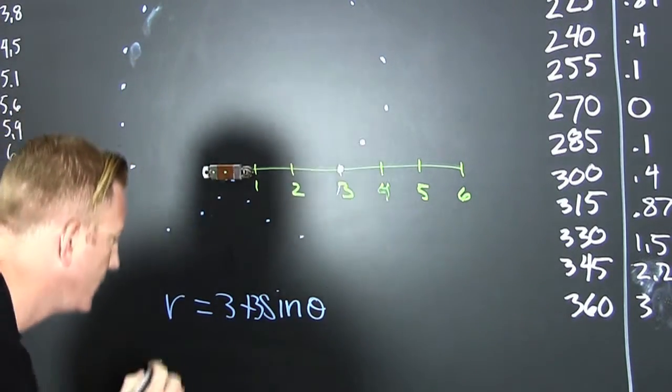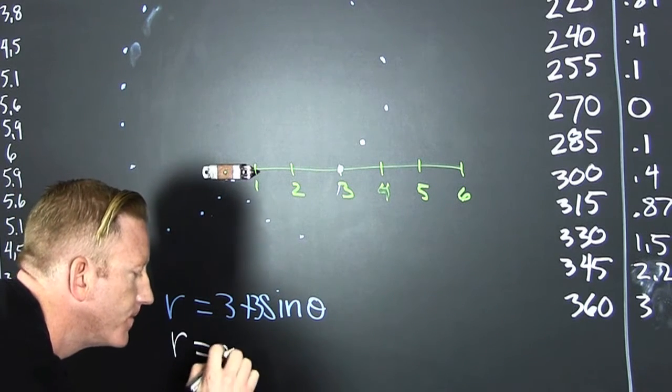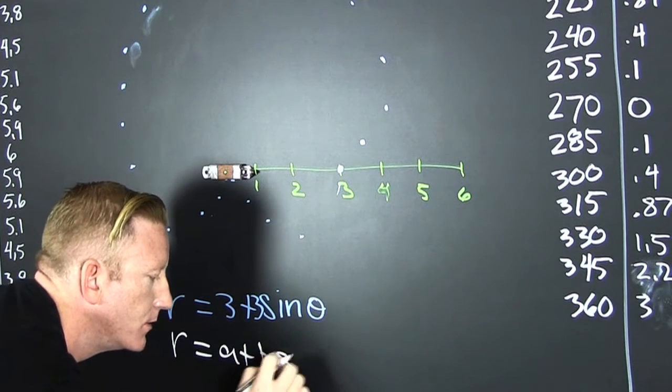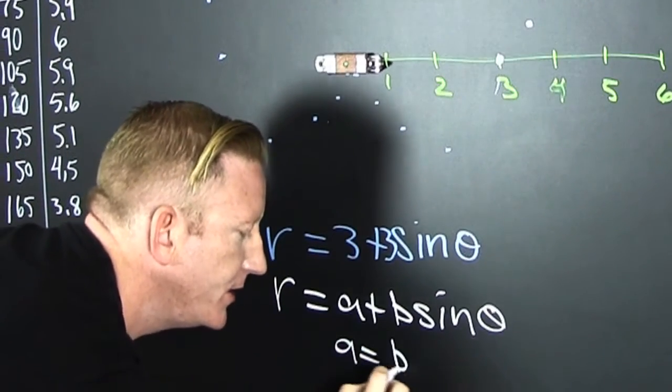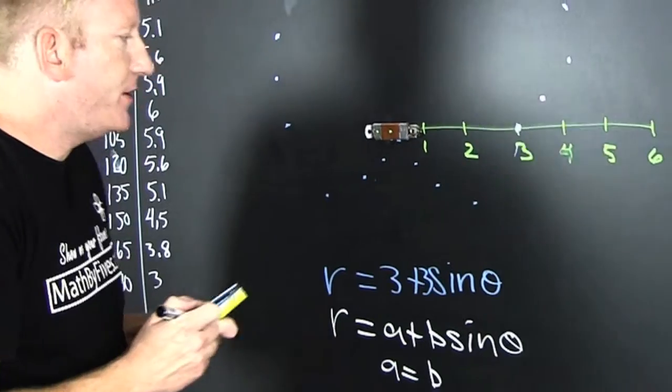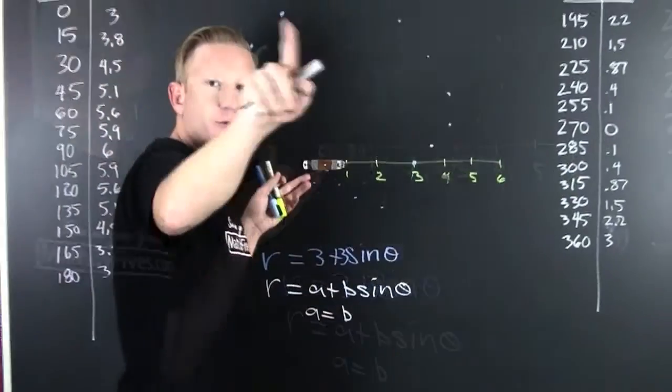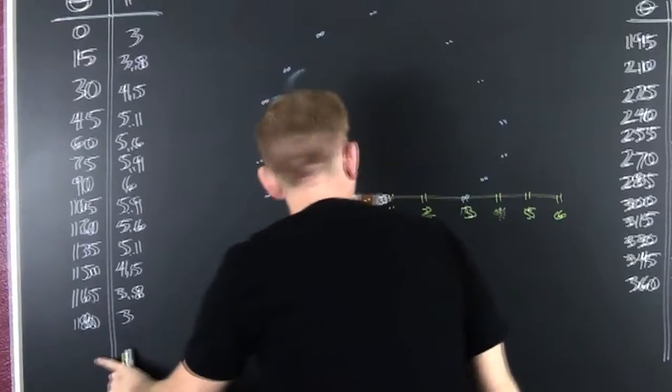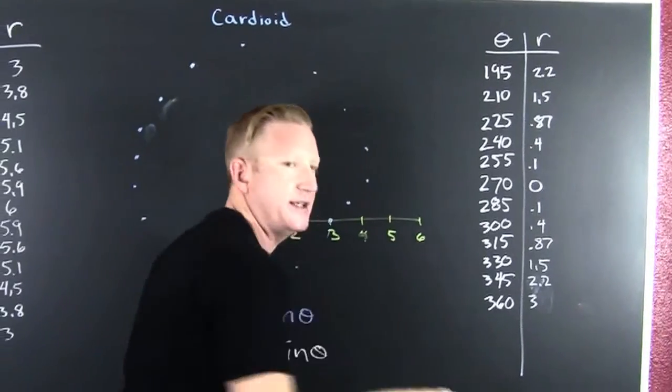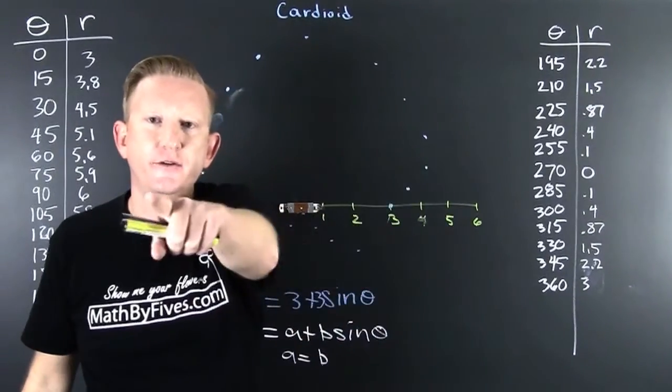What happens when a and b are equal? When a and b are equal, we go through and we calculate a few values. Theta from 0 to 360. This will come full circle.